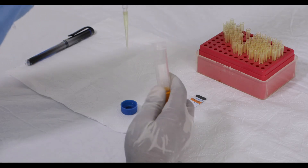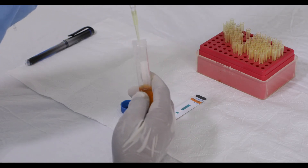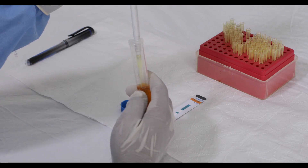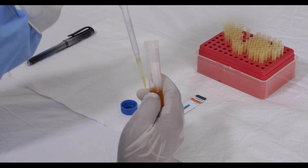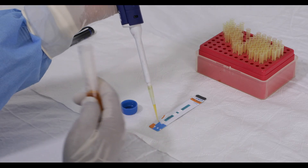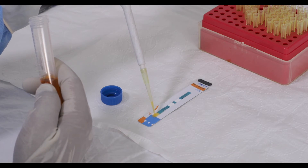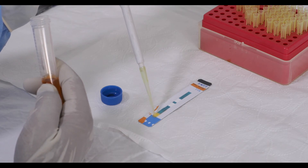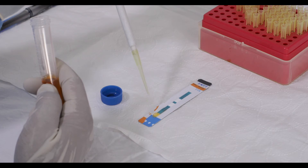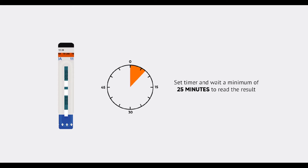Using the already calibrated pipette, apply 60 microliters of the sample — or 2 drops of urine — to the sample pad, a white pad marked by the arrow symbol. After that, set a timer and wait a minimum of 25 minutes to read the result.